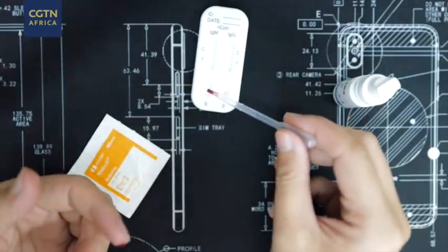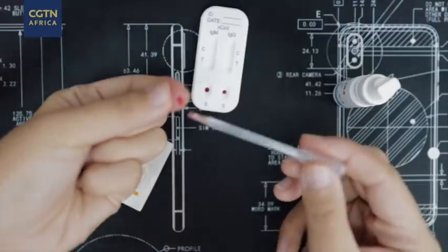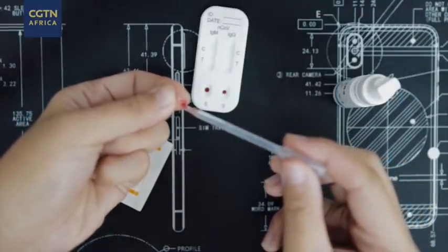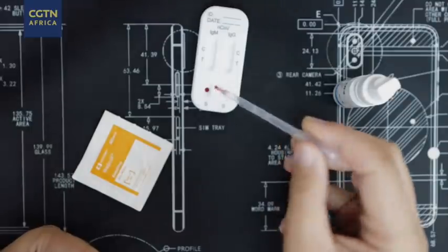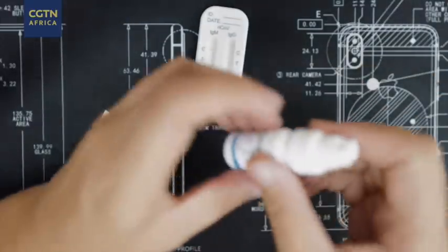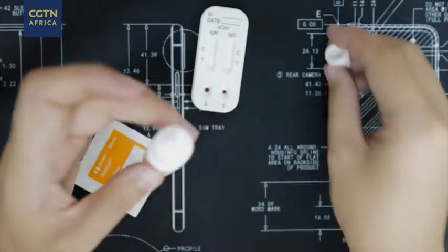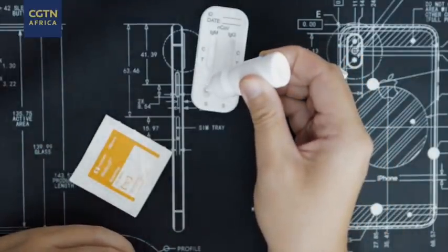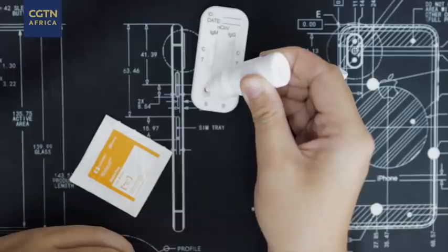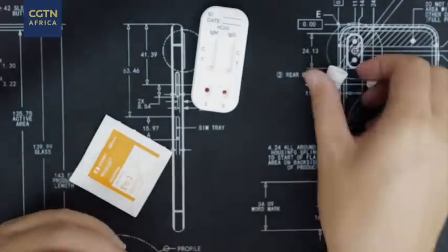With this one, I just drop it here. Just in case if I have more. Okay. And then from here, I'm going to use the diluent. I drop one drop, two drops. And then we just wait.